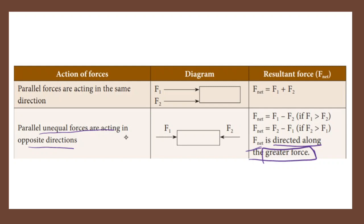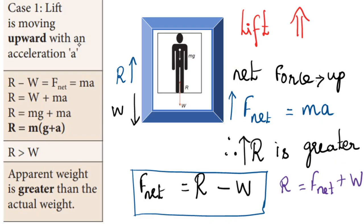Parallel and unequal forces acting in the opposite direction: F net is always directed along the greater force. First condition — lift is moving upward with an acceleration. This is a normal condition in the lift. The lift is moving in the upward direction, so the net force is upward.